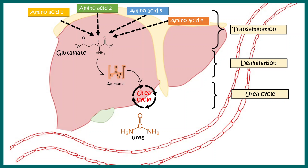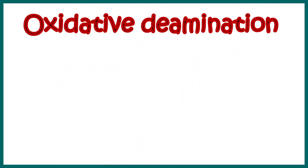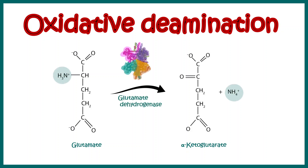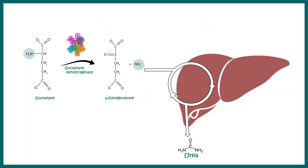Now let us look at oxidative deamination in a bit more detail. Glutamate will be converted to alpha-ketoglutarate and ammonia will be released. This reaction is triggered by the glutamate dehydrogenase enzyme and takes place principally in the liver.